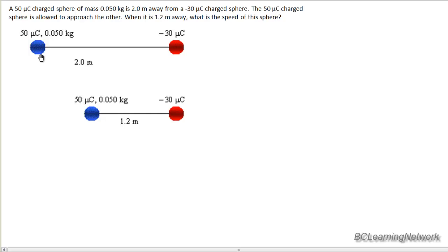Once this 50 microcoulomb charge is 1.2 meters away, so in other words, I'm hanging on to it here in the initial position where my hand is, and I let go, and it starts to speed up as it's accelerated towards this negative 30 microcoulomb charge. Remember, opposites attract. Once it's 1.2 meters away, we want to know how fast it's going. What is the speed of that sphere?